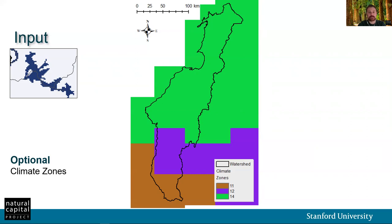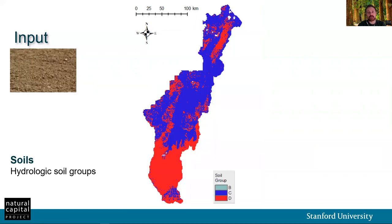Similarly to this optional climate zone layer, you can choose to input a recharge layer if you happen to have one from a different model. Here is our hydrological soil groups raster input. Soil groups are defined by the Soil Conservation Service. You'll notice that in this case, greater than 99% of the AOI is composed of groups C and D. These soil groups consist predominantly of fine-textured particles, such as clays, have slow infiltration rates, and high runoff potentials, which translates into high flooding in low-lying areas during storm events.